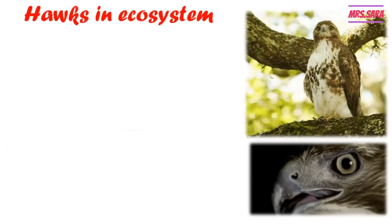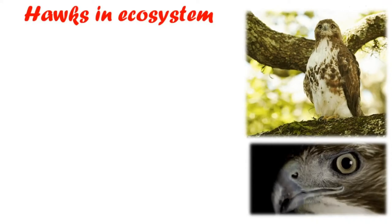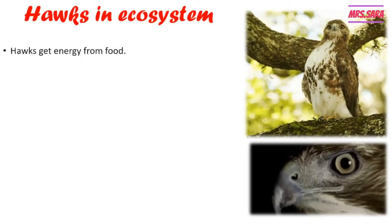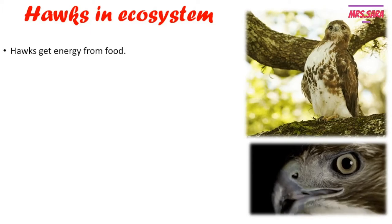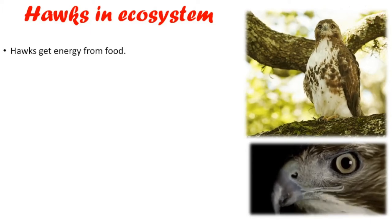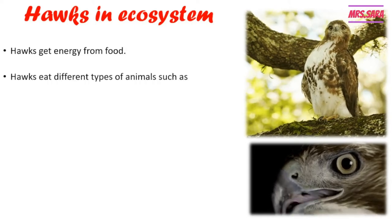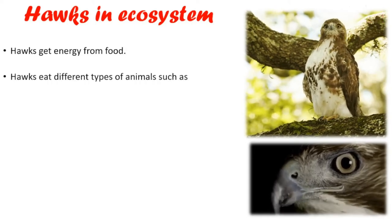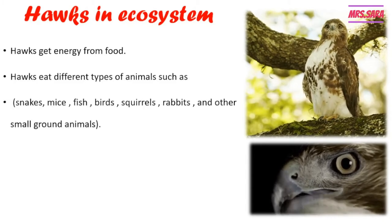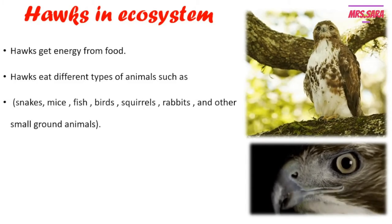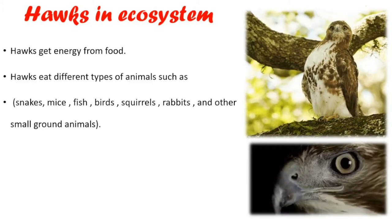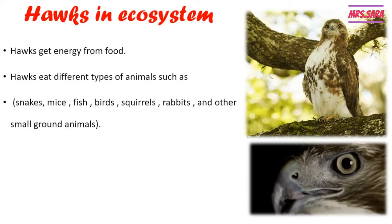What can you see here? This is a hawk. Hawks in the ecosystem have to get energy too. They get energy from food, like all living organisms. Hawks eat different types of animals such as snakes, mice, fish, birds, squirrels, rabbits, and other small ground animals — meaning animals that live in the ground.